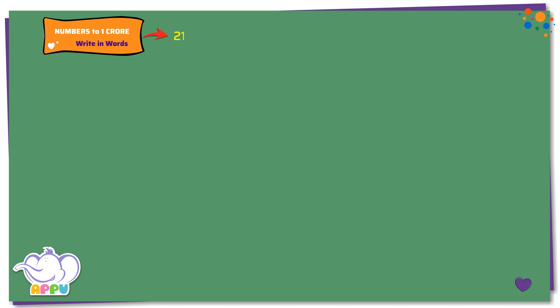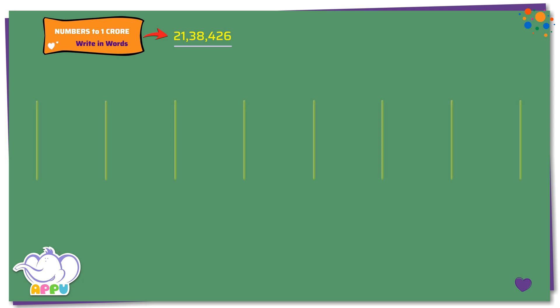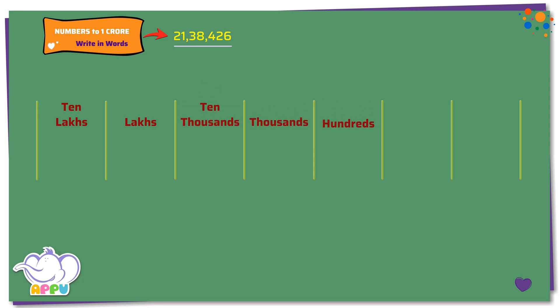Write in words: 2138426. We can write 2138426 in a table of 10 lakhs, lakhs, 10 thousands, thousands, hundreds, tens, and ones. That is 2, 1, 3, 8, 4, 2, 6.